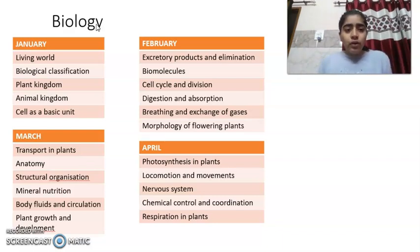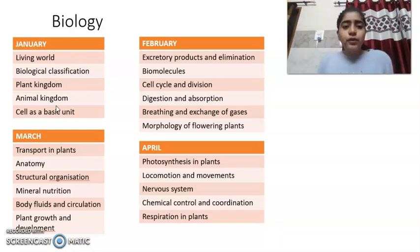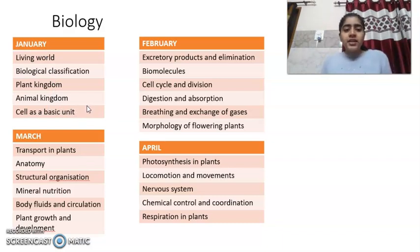For Biology in January, you have to do Living World, Biological Classification, Plant Kingdom, and Animal Kingdom — that is the whole Diversity unit. Along with it, you have to do the Cell as a Basic Unit of Life chapter, which will cover all the basic points.